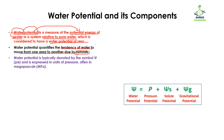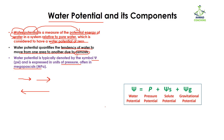Water potential helps us study the tendency of water to move — whether it can move from one area to another, and in which direction, whether forward or reverse. Water potential is denoted by the symbol psi (Ψ) and is expressed in units of pressure known as megapascals (MPa).